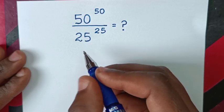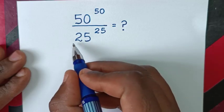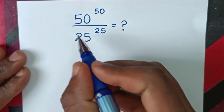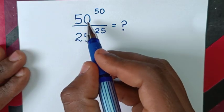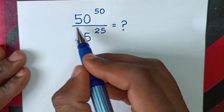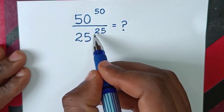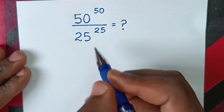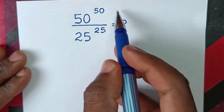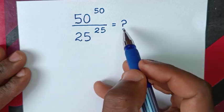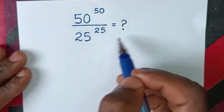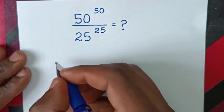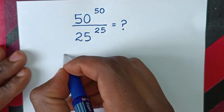Hello, you are welcome. We will solve this math problem: 50 to the power of 50 over 25 to the power of 25. To solve this problem we have two methods. This is the first method.